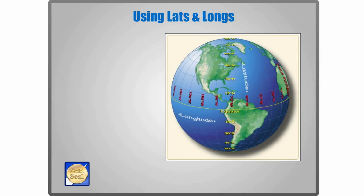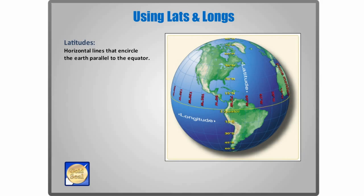The globe is surrounded by a grid of lines measured in degrees and minutes that allow us to define specific points on the surface. Lines of latitude encircle the Earth horizontally, parallel to the equator.